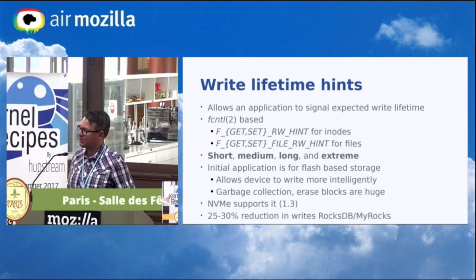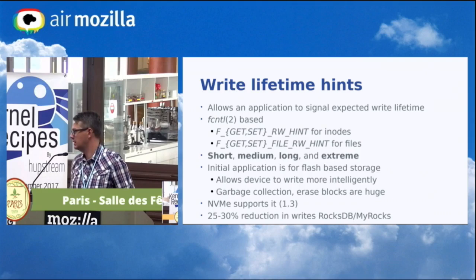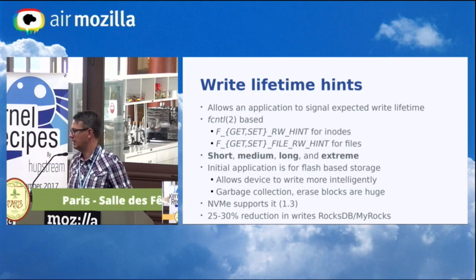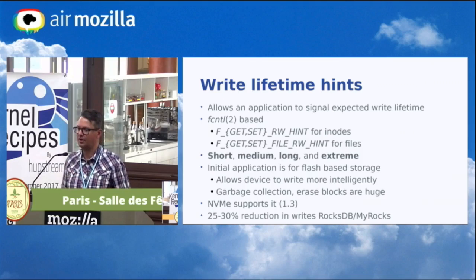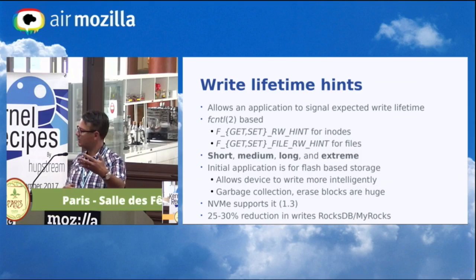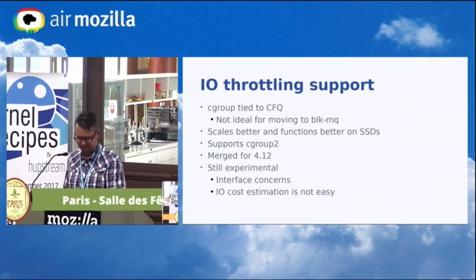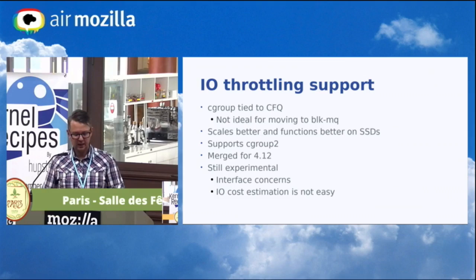Regarding whether write lifetime hints set on an inode are persistent: currently they are not — the file system could choose to make it so, but that's not currently the case. When writing data again the device should already know what stream this belongs to. The reason we have hints on both inodes and files is for buffered IO: the kernel does async writeback asynchronously, so we need to tie hints to the inode. When you do a write for a file, it checks if there's a hint set on the file, then falls back to the inode.